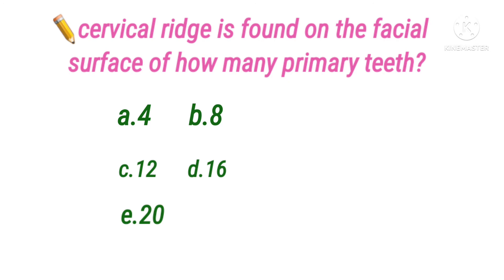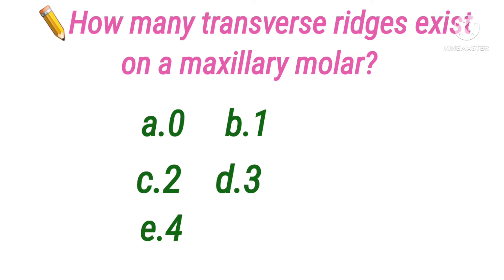Next question: the cervical ridge is found on the facial surface of how many primary teeth? Options A 4, B 8, C 12, D 16, E 20. The cervical ridge is a characteristic feature of all primary teeth and runs mesiodistally in the cervical third of the buccal or facial surface. In the permanent dentition it is seen only in permanent molars. The cervical ridge is prominent in primary anterior teeth and is best seen from the proximal side. The answer is 20, since the cervical ridge is found on the facial surface of all primary teeth.